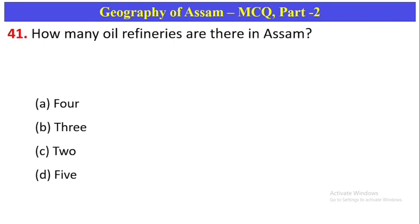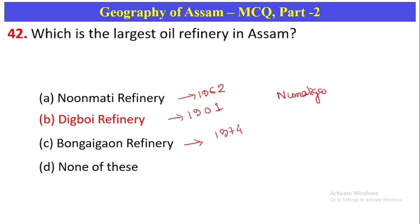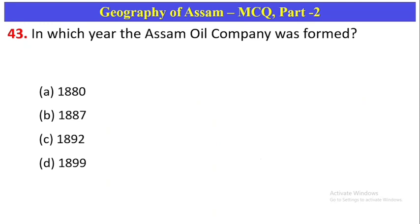In which year was oil first drilled in Assam? 1866 — Option D. First oil was drilled near which river? Near the Namdang river — Option C. How many oil refineries are there in Assam? There are four oil refineries — Option A. Which is the largest oil refinery in Assam? The Bongaigaon refinery — Option B. The Guwahati refinery started in 1962, the Digboi refinery started in 1901, the Bongaigaon refinery started in 1974, and another refinery started in 1929.